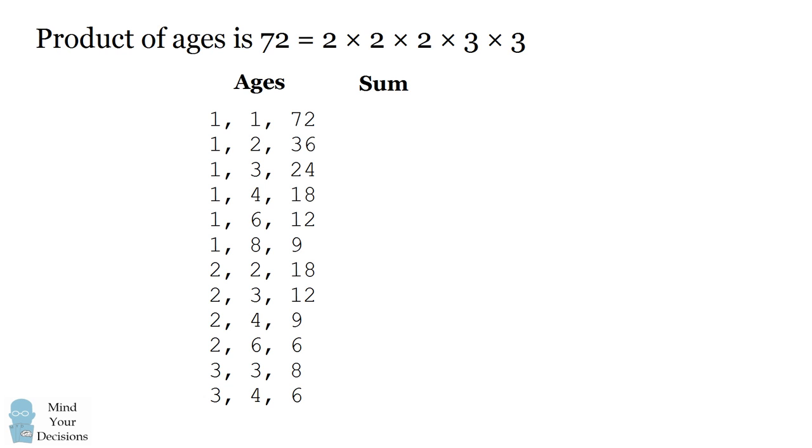The census taker could work out the sum of the three ages to get these results. So now, here's what goes through the census taker's mind. The mathematician says if you add up the three ages, you get the house number.